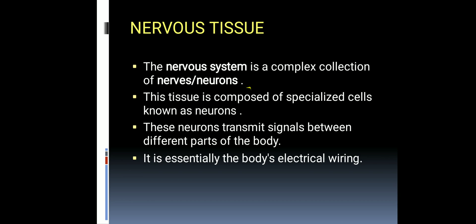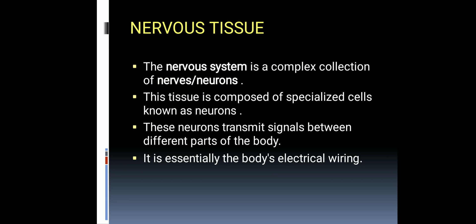Just as the structural and functional unit of the kidney is the nephron (N-E-P-H-R-O-N), the structural and functional unit of the nervous system is a special cell known as the nerve or neuron. This tissue is composed of specialized cells called neurons, and these neurons transmit signals between the different parts of the body. That is its primary function.